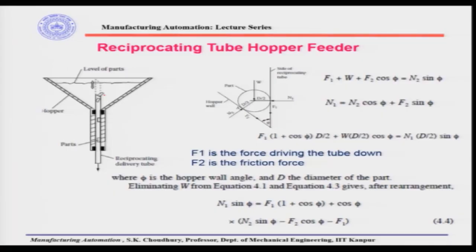Welcome back. Last time we were discussing the reciprocating tube hopper feeder, after we had discussed the vibratory bowl feeder. The reciprocating tube hopper feeder is also used for small engineering parts. In this design, through the mass of the part located in the bowl, the tube reciprocates. The tube has a hollow inside, and the hollow silhouette is made as per the part shape. Through the hollow part of the tube, parts come to the outlet. One basic aspect is that the part should not jam between the side of the reciprocating tube and the hopper wall.